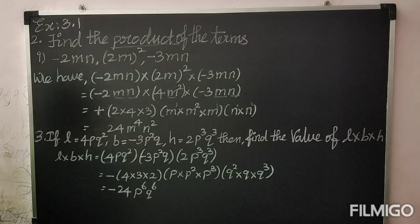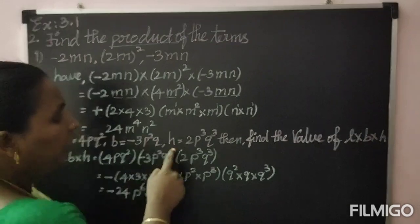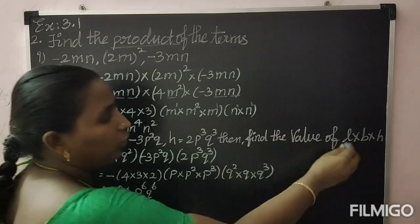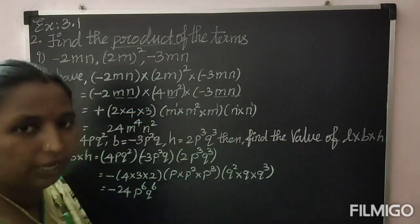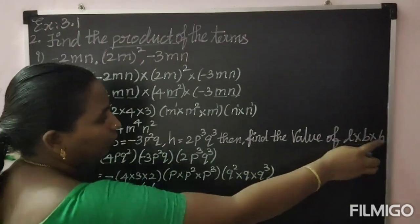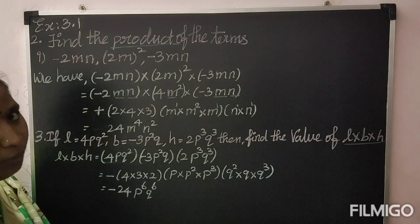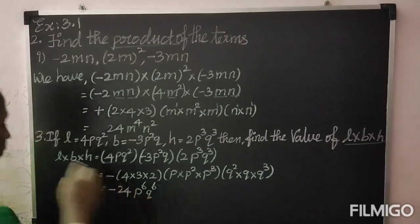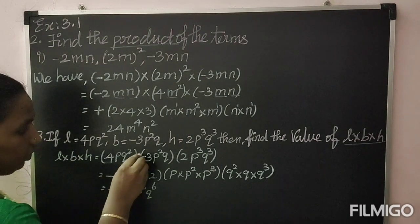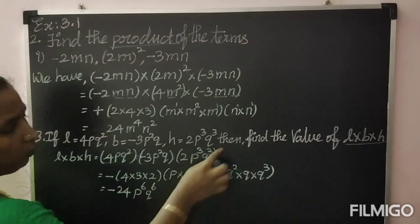If L equals 4pq squared, b equals minus 3p squared q cubed, h equals 2p cubed q cubed, then find the value of L into b into h. So L is length, b is breadth, h is height — we are going to find L × b × h, which is the volume of a cuboid formula. So L × b × h equals 4pq² × (−3p²q³) × 2p³q³.